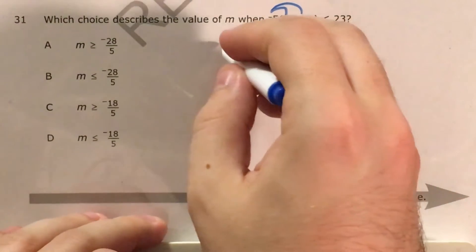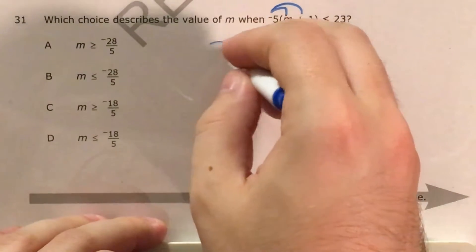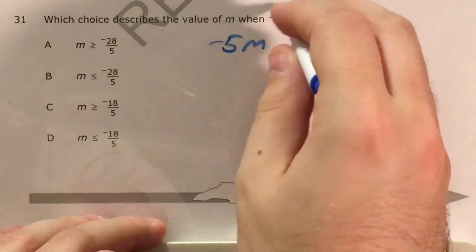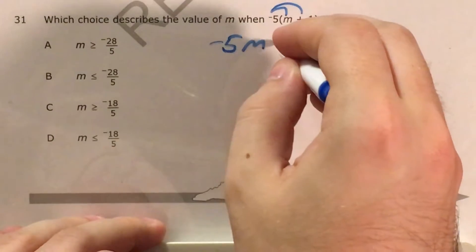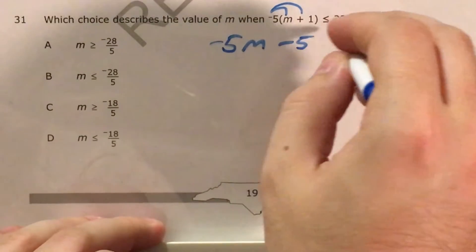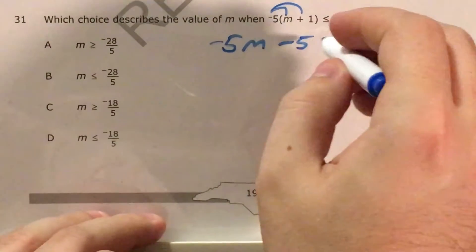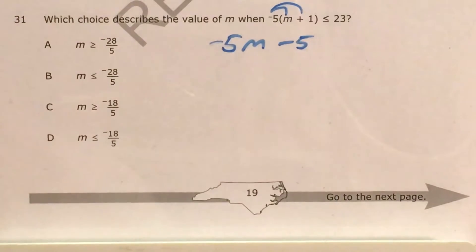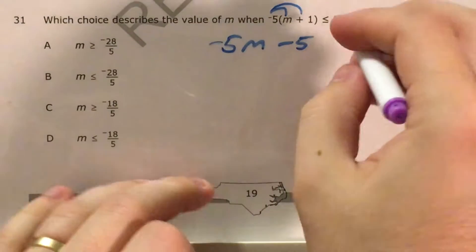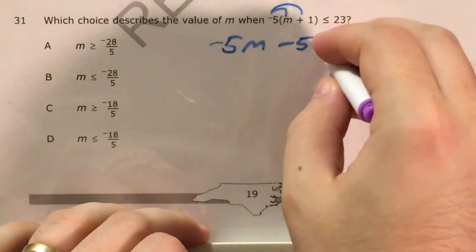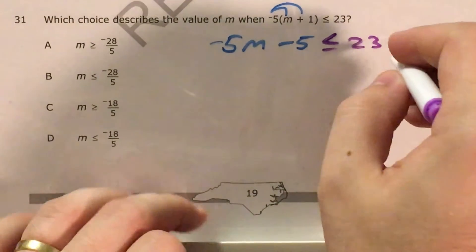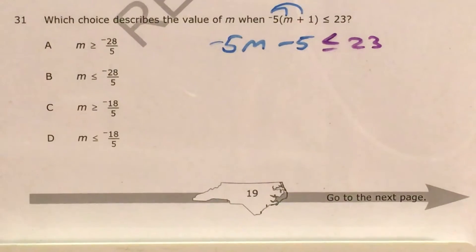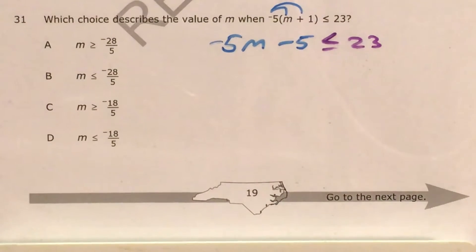Negative 5 times m will give me negative 5m. Negative 5 times positive 1 will give me negative 5, which I'll write as minus 5. And I know that all this still has to be less than or equal to 23. So we haven't really changed anything about this yet.